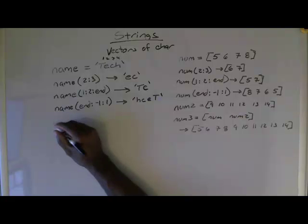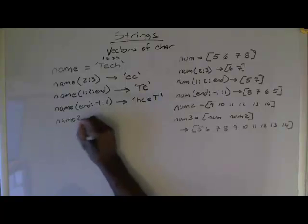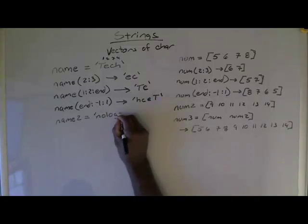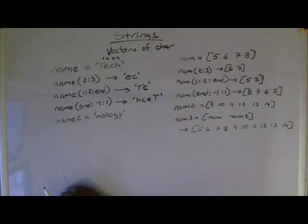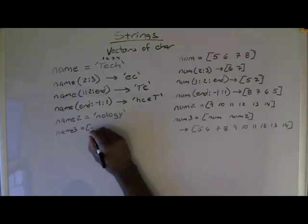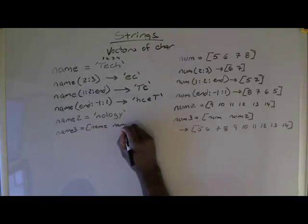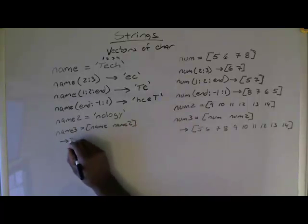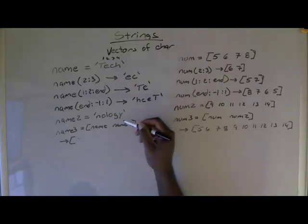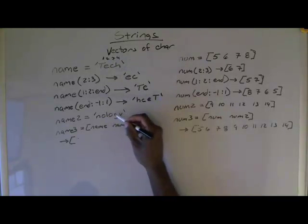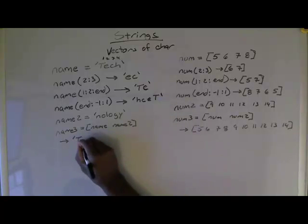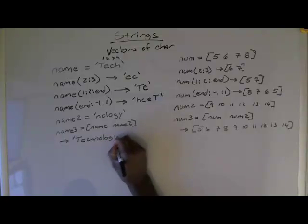Let's define something called name2, and name2 equals the string 'nology'. Then if I do num3 equals name concatenated with name2, that should give me the string—name is 'tech' and name2 is 'nology'—so that will give me the string 'technology'.